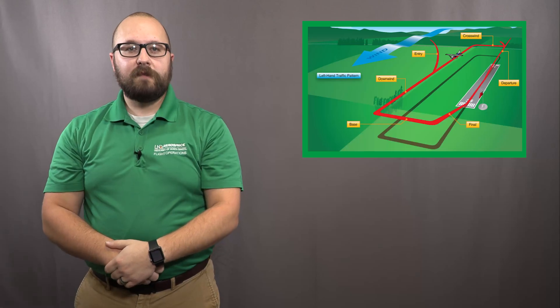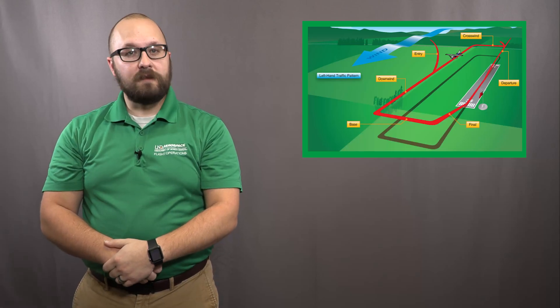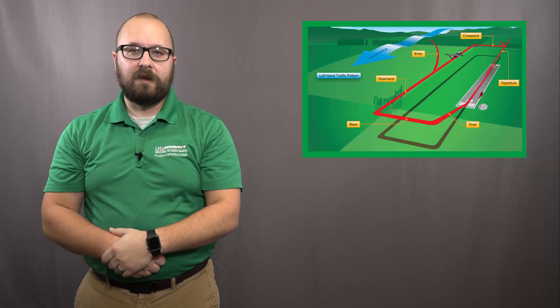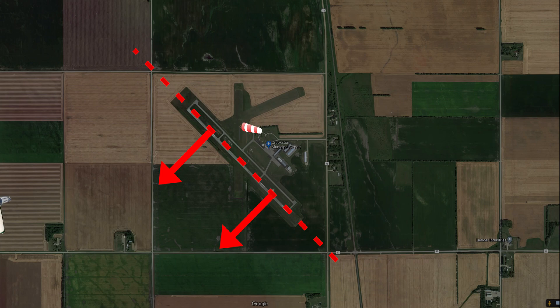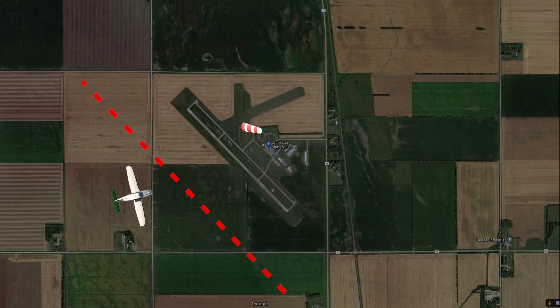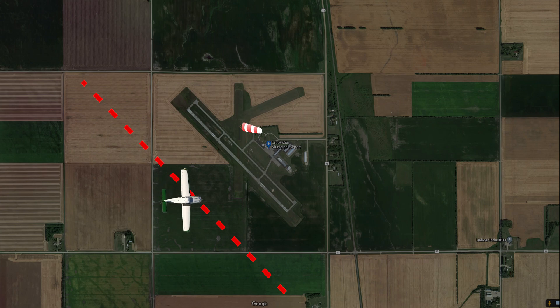The 45-degree entry into the downwind is the easiest way to enter the traffic pattern. You can use this method if the wind direction is known. When entering the pattern from the downwind side, you simply maneuver the aircraft so that you are lined up 45 degrees from the downwind leg, enter at the midfield point and at traffic pattern altitude.